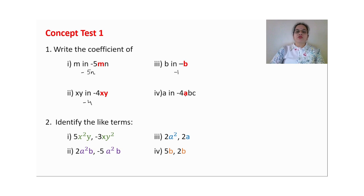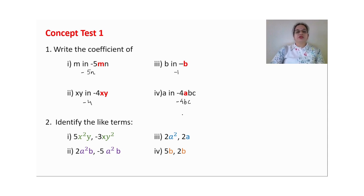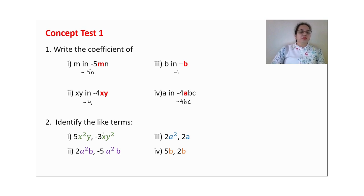Coefficient of a: in minus 4bc, leaving a aside, the coefficient of a is minus 4bc. Now identify the like terms. For x squared y — the powers of x are different (x squared vs x to the power 1), so these are unlike terms.